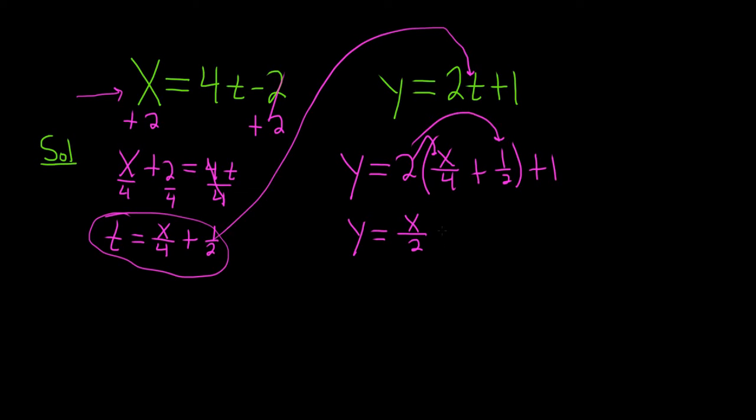And then 2 times 1/2 is, well, it's just 1, so plus 1. Then we still have this other 1 over here outside the parentheses. So Y equals, let's write it like this, 1/2 X + 2.